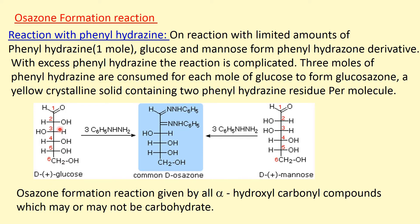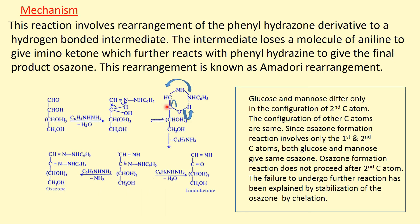This is the glucose molecule — D-plus glucose — and this is mannose. Both of them, when treated with phenylhydrazine, form the same osazone. Osazone formation reaction is given by all alpha-hydroxy carbonyl compounds, which may or may not be carbohydrates. Now, the mechanism.